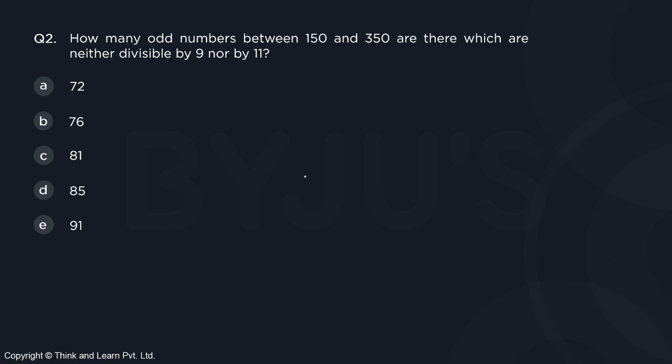So here is the second question. It says how many odd numbers between 150 and 350 are there which are neither divisible by 9 nor by 11.